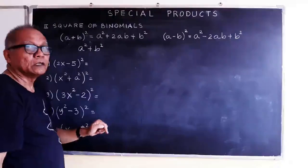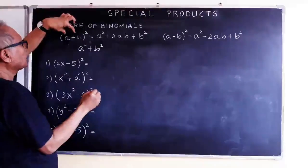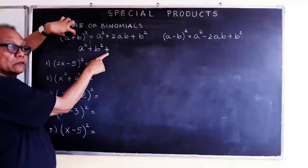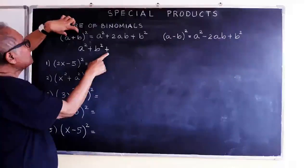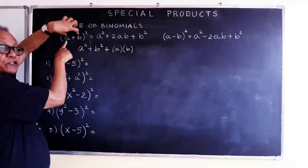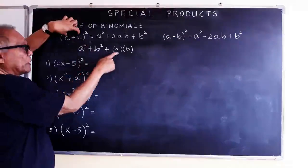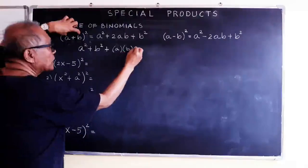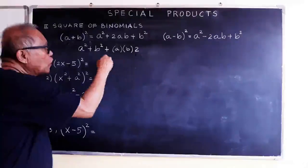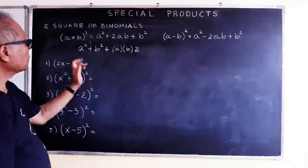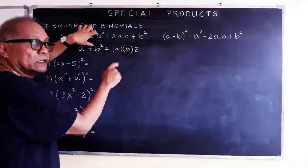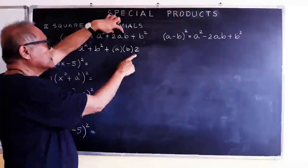For the middle term: if this one is positive times positive, you know it is positive. Then you apply a times b — the first term times the second term — times 2, because there will be 2 of them. So we multiply by 2. Don't forget the 2; the 2 will always be there. So when we arrange it: a squared, plus b squared, and the middle term is 2ab.